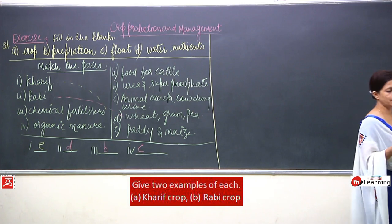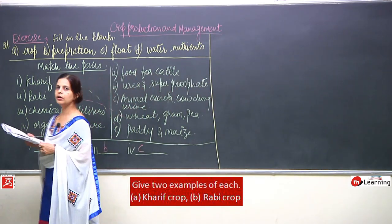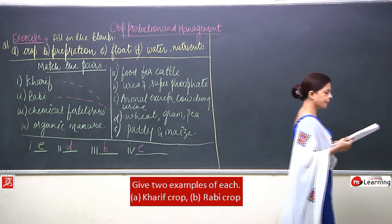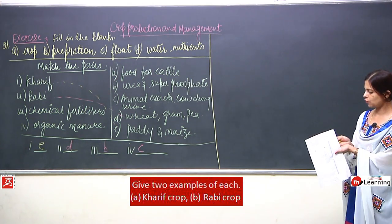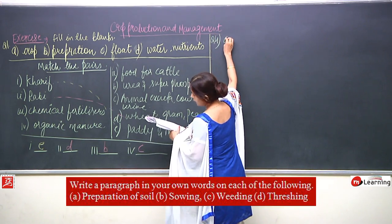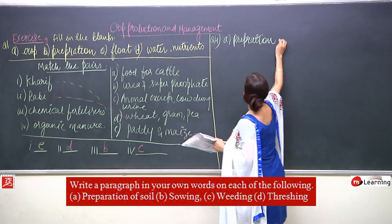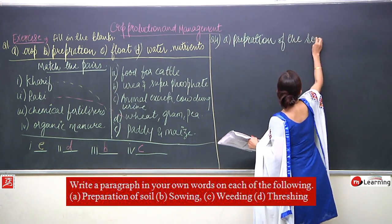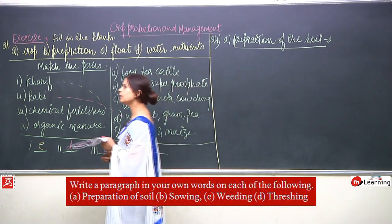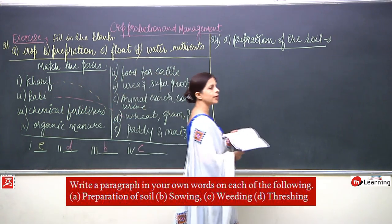Question number four says: write a paragraph in your own words on each of the following. The first one, question 4A, is preparation of soil. I told you before — preparation of soil is required, why it is required, what it is, and how it is done — we need to write a short paragraph on this.